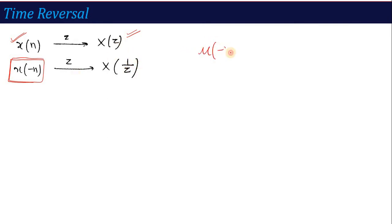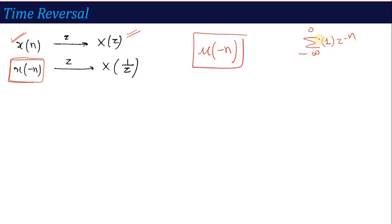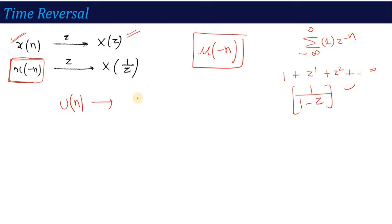For example, suppose we want to calculate the Z-transform of u(-n). If I go from the basic formula — summation n = -∞ to ∞ — I would need to calculate the limit where u(-n) exists, that is from -∞ to 0, and then put value 1 there, z^(-n), and solve. But by using the time reversal property: u(n)'s Z-transform is 1/(1 - z^(-1)), and by time reversal, z is replaced by 1/z, giving 1/(1 - z), so u(-n)'s Z-transform is 1/(1 - z).